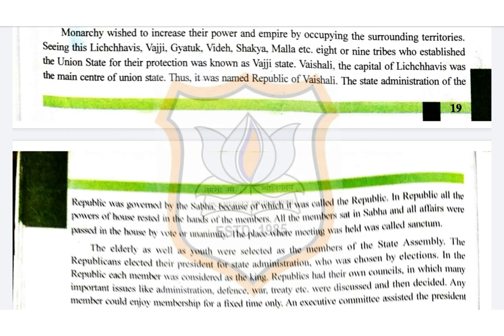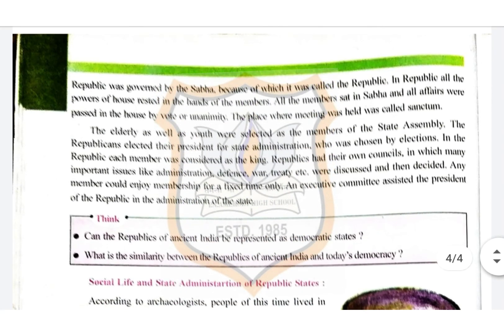Vaishali, the capital of the Lichchhavis, was the main center of the union state, and thus it was named the Republic of Vaishali. The state administration of the republic was governed by the Sabha, because of which it was called a republic. In a republic, all the power rested in the hands of the members. All members sat in the Sabha and all affairs were decided by vote of the assembly.